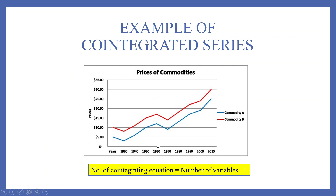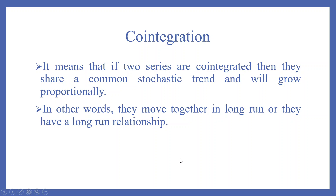How many co-integrating equations can be present? Only one. This means that the number of co-integrating equations in a VECM model is equal to the number of variables minus one. It means that if two series are co-integrated, they share a common stochastic trend and will grow proportionally — in other words, they move together in the long run, or they have a long-run relationship.